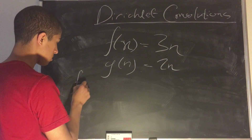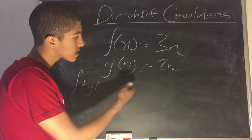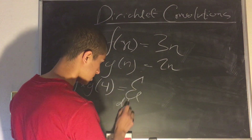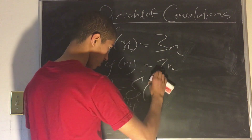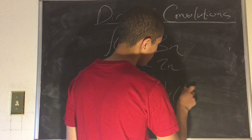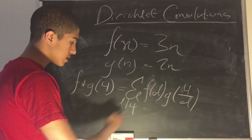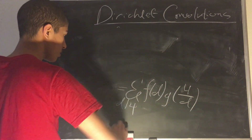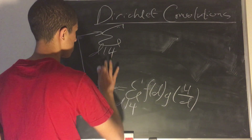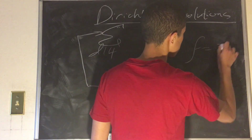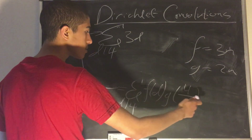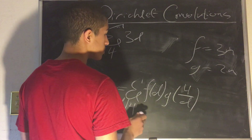Then f star g of 4 is equal to the sum over d divides 4 of f of d times g of 4 over d. Recalling that f equals 3n and g equals 2n, this becomes the sum over d divides 4 of 3 times d times 2 times 4 over d, which is 3d times 8 over d.